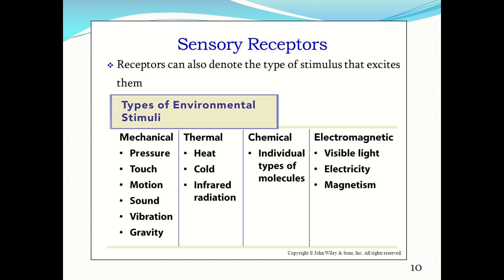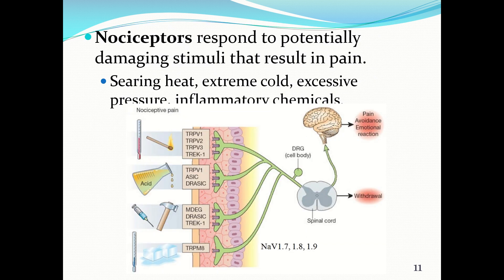This illustration shows the types of environmental stimuli detected by each receptor type. With mechanical stimuli there's pressure, touch, motion, sound, vibration, and gravity. Thermal stimuli include heat, cold, and even infrared radiation. Chemical receptors detect individual types of molecules. Electromagnetic stimuli include visible light for photoreceptors, and some animals are also sensitive to electricity and magnetism — magnetism aids in the migration of certain animals because they can sense the poles.